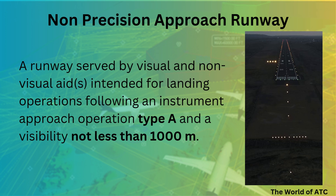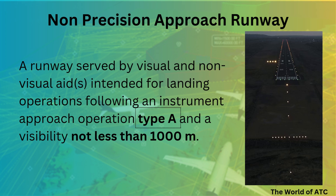What are instrument approach operations type A? There are two types: type A and type B. If the decision height for an approach is above 250 feet, that is type A. However, if the decision height is below 250 feet, that becomes type B.